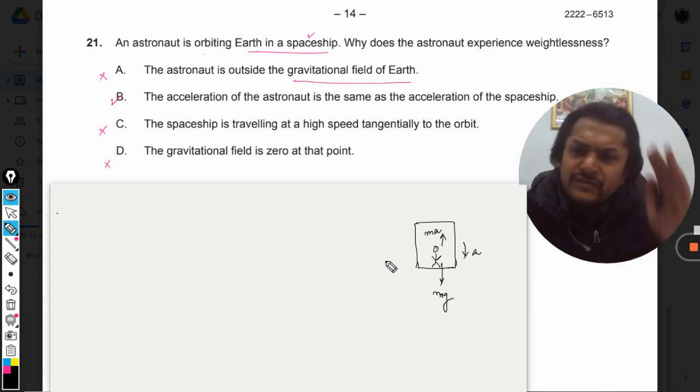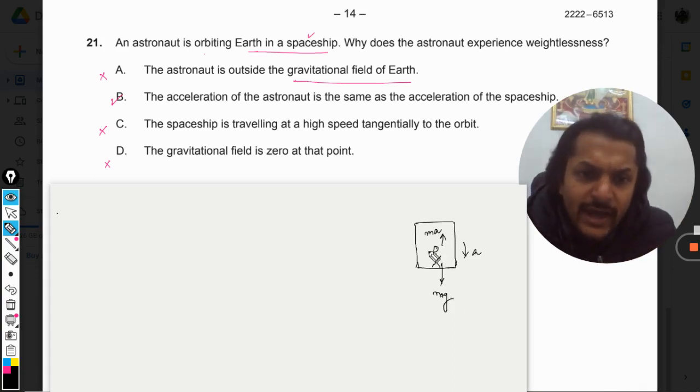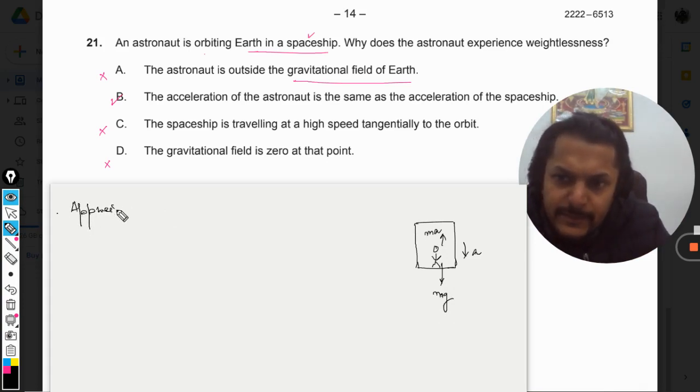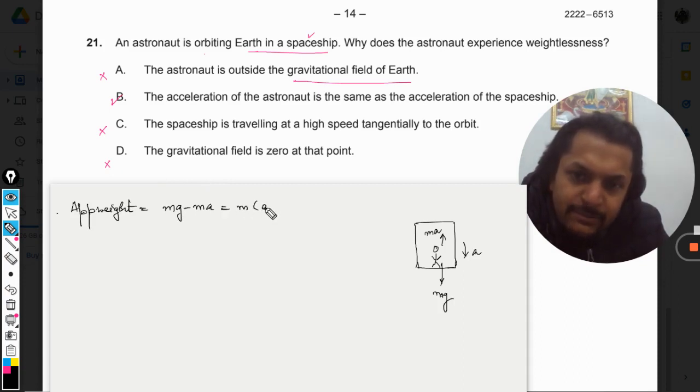So you can go there in the motion chapter and you can see I have given the complete and exhaustive detail about this thing. So now ma is above, the pseudo force, and mg is down. So what is the apparent weight here?